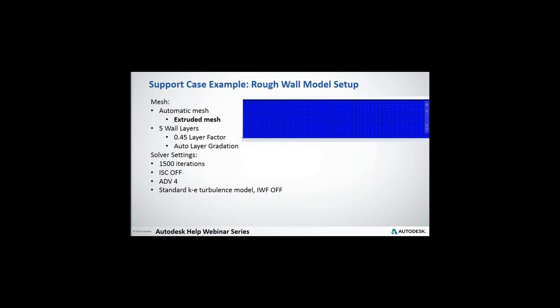What was really cool about this example is that I was able to use an extruded mesh, and I really didn't have a lot of mesh at all. Just saves you, compared to tetrahedrals, it saves you maybe an order of magnitude on element count. It's pretty incredible. So I did that automatic assessment, maybe refined it a tiny bit and then extruded from beginning to end. I used five wall layers, 0.45 layer factor, like we've been talking about, and I only went 1,500 iterations. And again, ISC off, ADV4. I did try ADV5, but ADV4 just gave me the edge by a small margin.